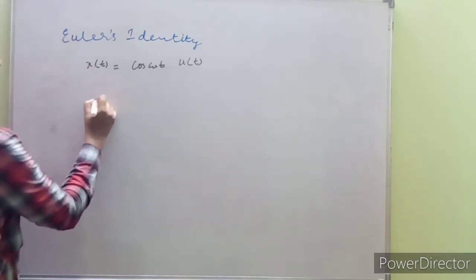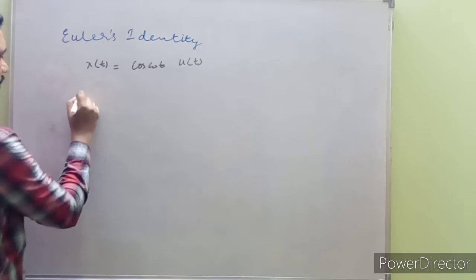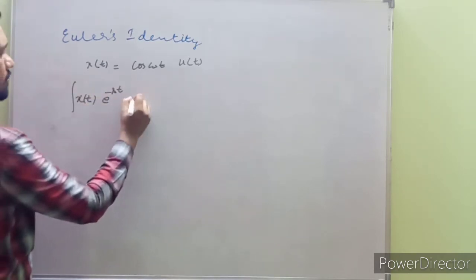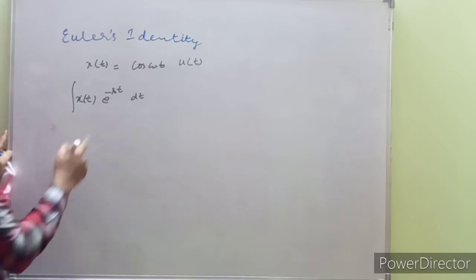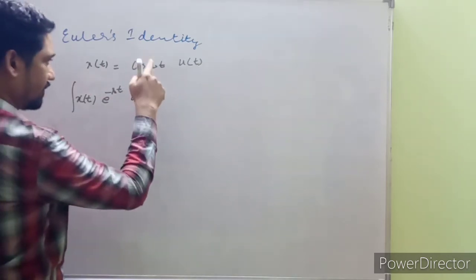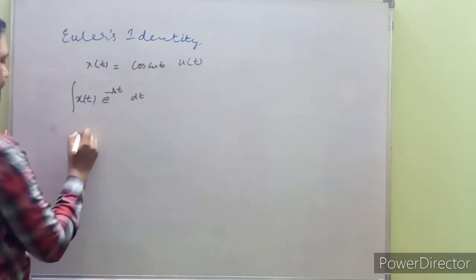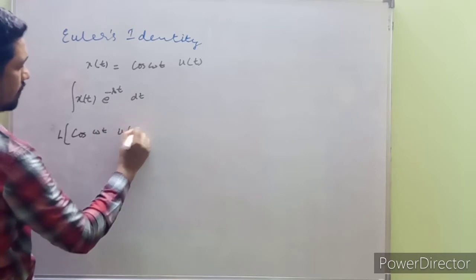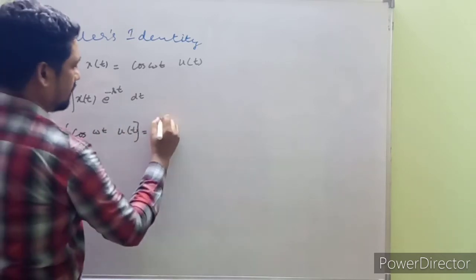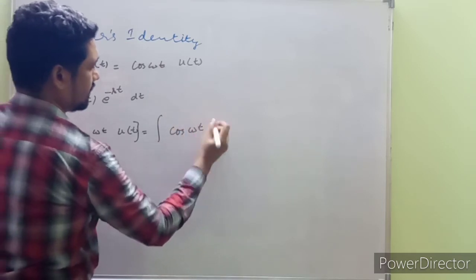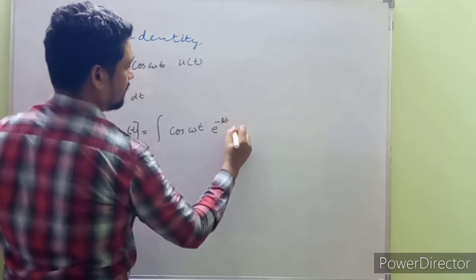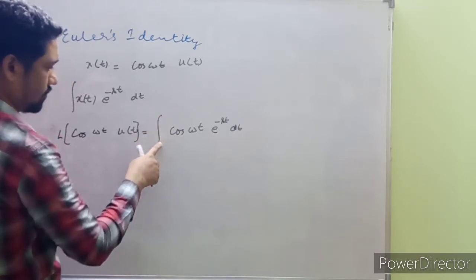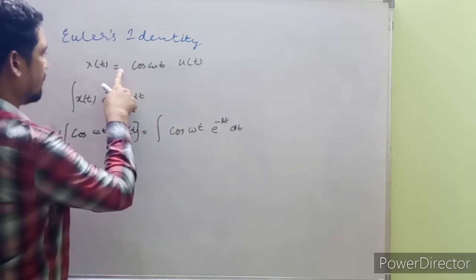The Laplace transform is defined as: given x(t), it is multiplied with e raised to minus st and integrated with respect to t. So the Laplace transform of cos(ωt)·u(t) will be the integral of cos(ωt) times e raised to minus st dt. We have an integration — what will be the limits of integration? The limits can be found from the given equation itself.